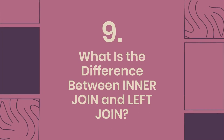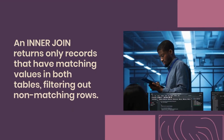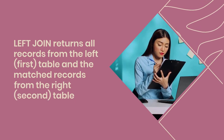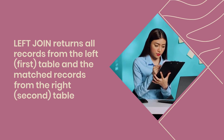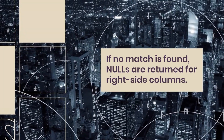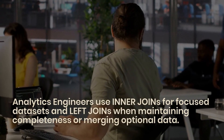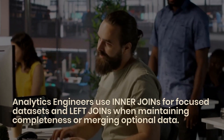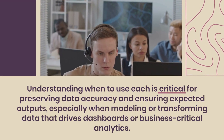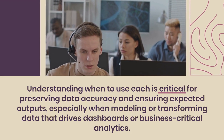Question 9: What is the difference between INNER JOIN and LEFT JOIN? An inner join returns only records that have matching values in both tables, filtering out non-matching rows. In contrast, a LEFT JOIN returns all records from the left (first) table and the matched records from the right (second) table. If no match is found, NULLs are returned for right-side columns. Analytics engineers use INNER JOINs for focused datasets and LEFT JOINs when maintaining completeness or merging optional data. Understanding when to use each is critical for preserving data accuracy and ensuring expected outputs, especially when modeling or transforming data that drives dashboards or business-critical analytics.